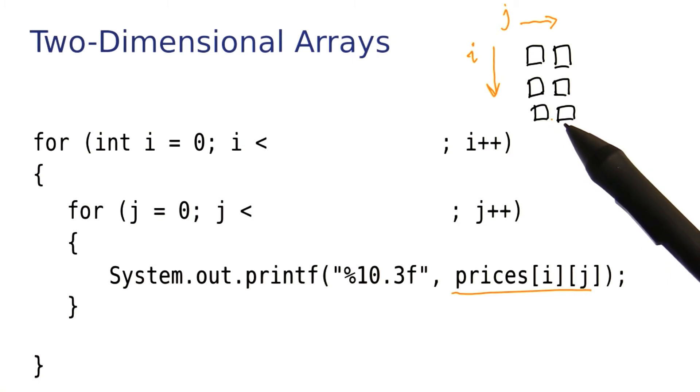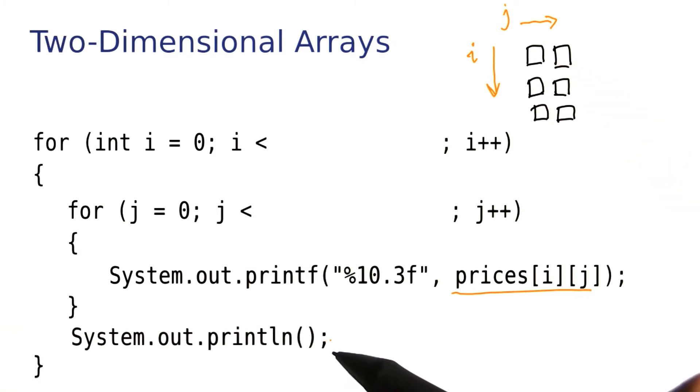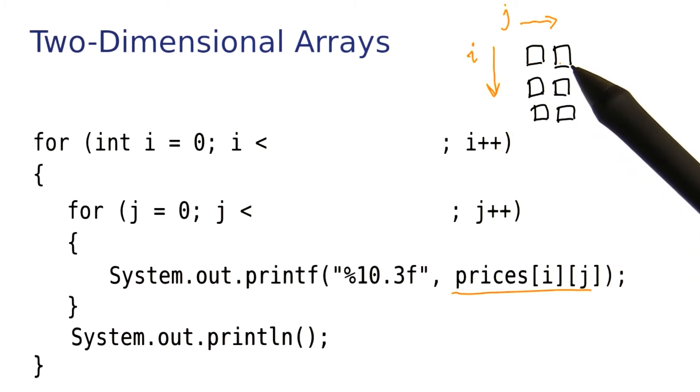Now, of course, we want the numbers to line up nicely, so after printing each row, we want to print a new line. Notice that this statement is contained in the outer loop, because it happens once per row, but it's not in the inner loop, because we don't want a new line after every one of the elements.